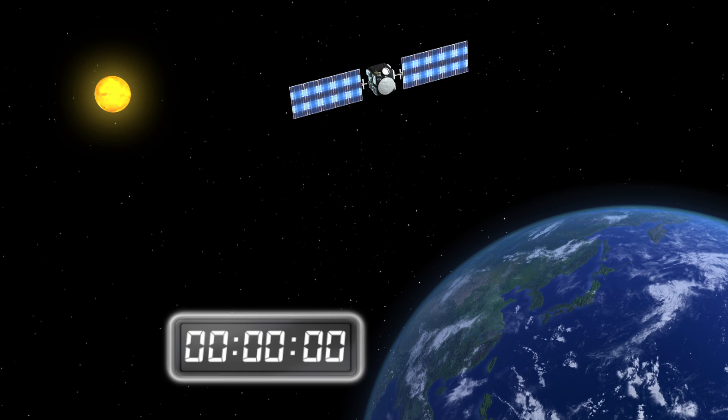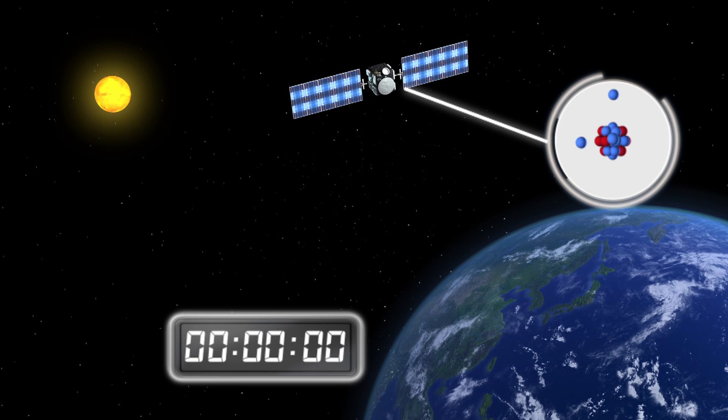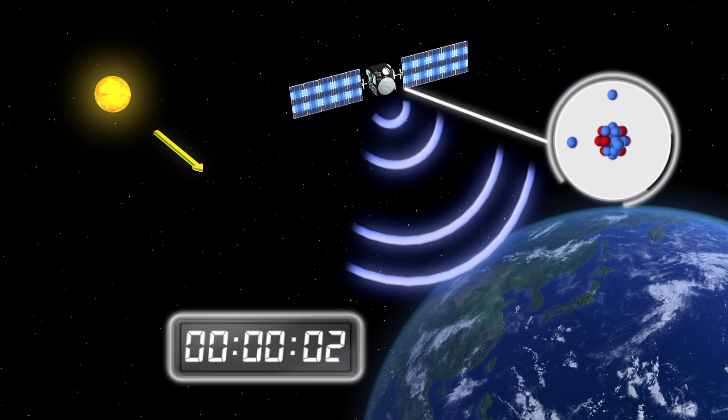The state of a photon is almost instantly reflected in its entangled photon, regardless of a distant location.